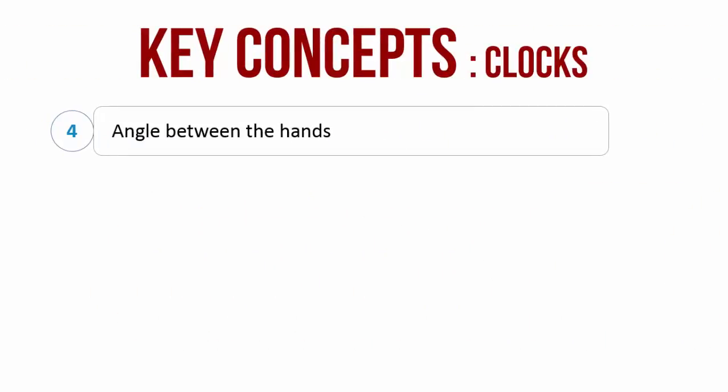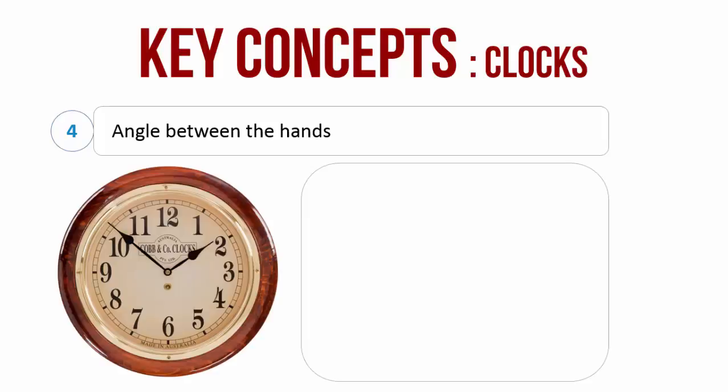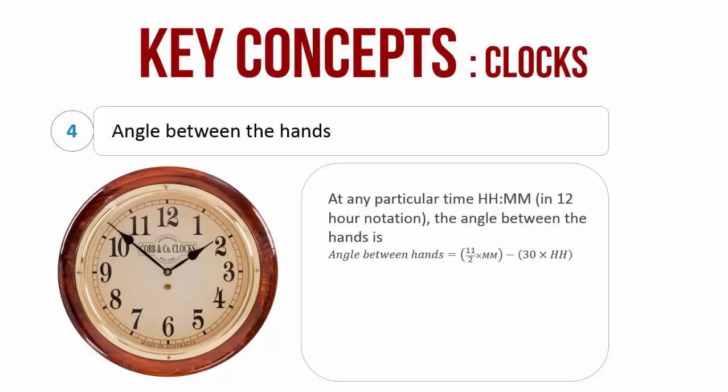The next concept is how to find the angle between two hands given the time of the day. At any particular time, that is hours to minutes in a 12-hour notation. By this I mean that 1 o'clock is represented as 0100 and not 1300. At any particular time, the angle between the hands is 11 by 2 into minutes minus 30 into H. If you remember this formula, you can solve any question in clocks. This formula has to be memorized because it is really important.